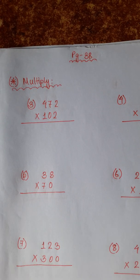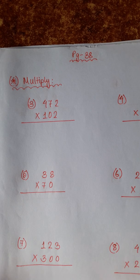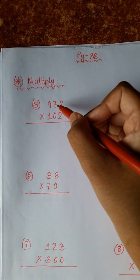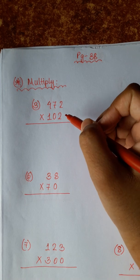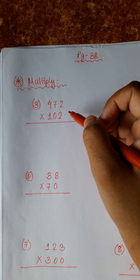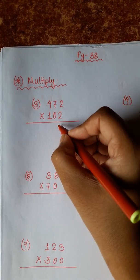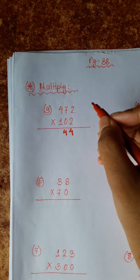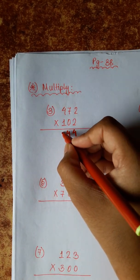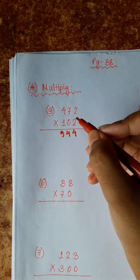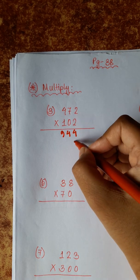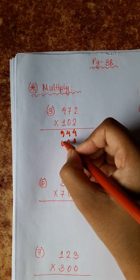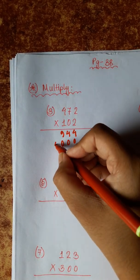Some of the first multiplications have 3 numbers. 472 × 102. 2 zeros are 0, 7 zeros are 0, 4 zeros are 0.